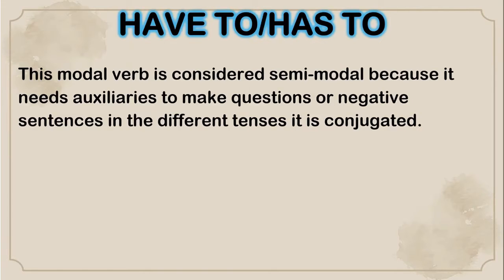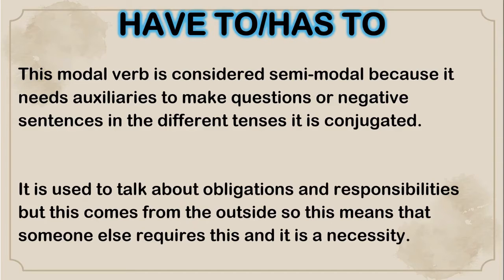Have to, has to. This modal verb is considered semi-modal because it needs auxiliaries to make questions or negative sentences in the different tenses. It is conjugated. In this case, you need to use do or don't for first and second person, and does or doesn't for third person. It is used to talk about obligations and responsibilities, but this comes from the outside — someone else requires this and it is a necessity. Have to is more informal, while must is mostly used in written letters or instructions.